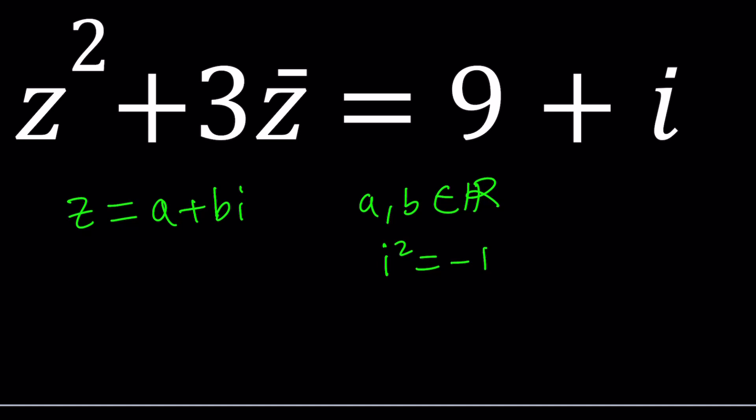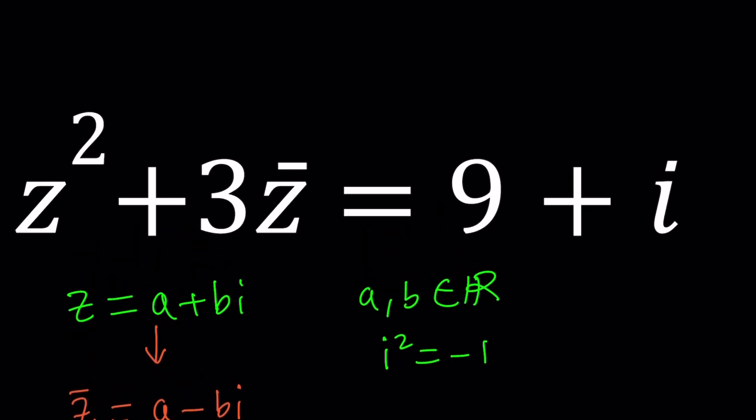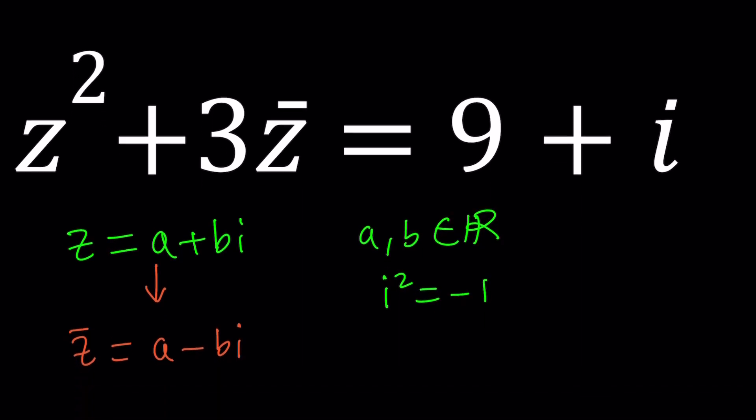Let's plug it in. But what is Z bar? Z bar is the complex conjugate. It's basically the number when you multiply by Z and add to Z you always get a real answer and that would be A minus B I. So let's plug these into the original equation and solve for A and B.